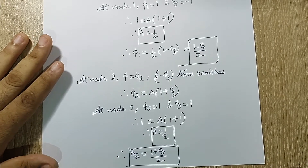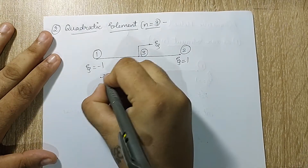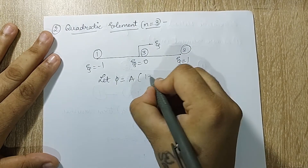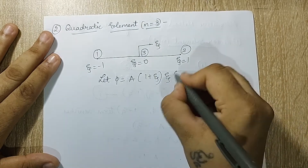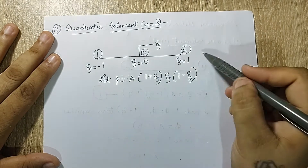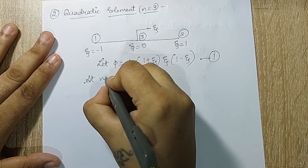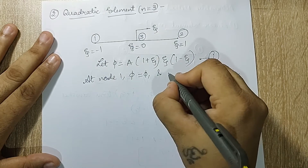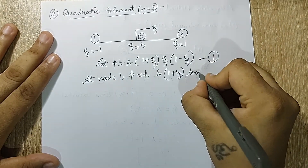Next we will talk about the quadratic element where n = 3. I write φ = a·(1 + ζ)·ζ·(1 - ζ) — node 1 contributes (1 + ζ), node 2 contributes ζ, and node 3 contributes (1 - ζ). This is equation 1. At node 1, φ = φ₁ and the term (1 + ζ) — given by node 1 — vanishes.